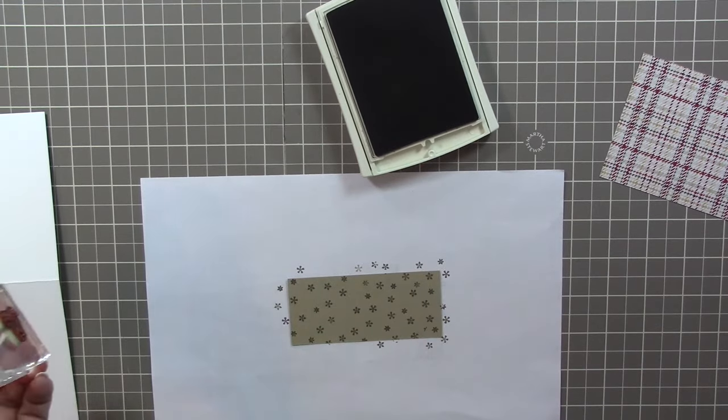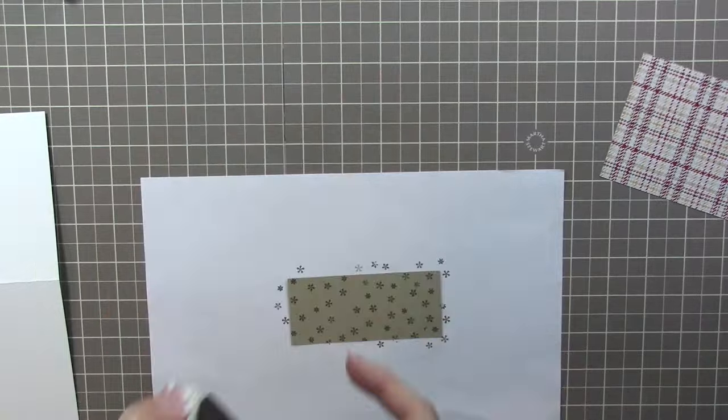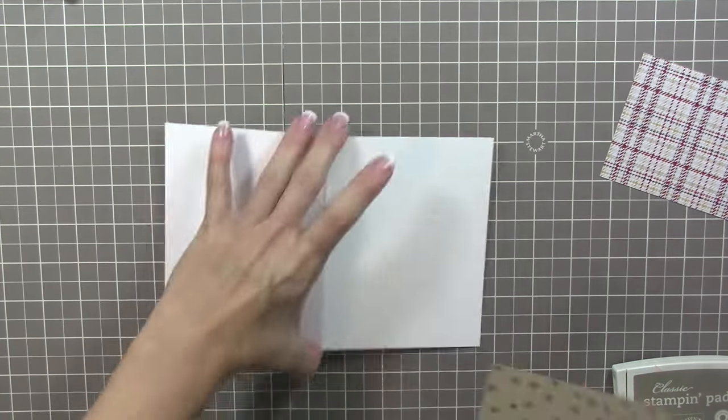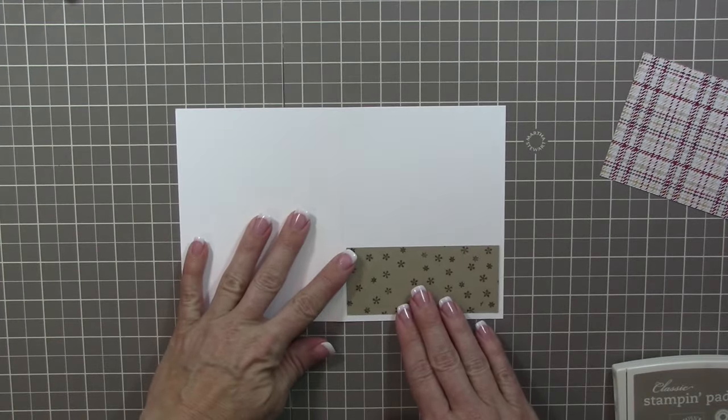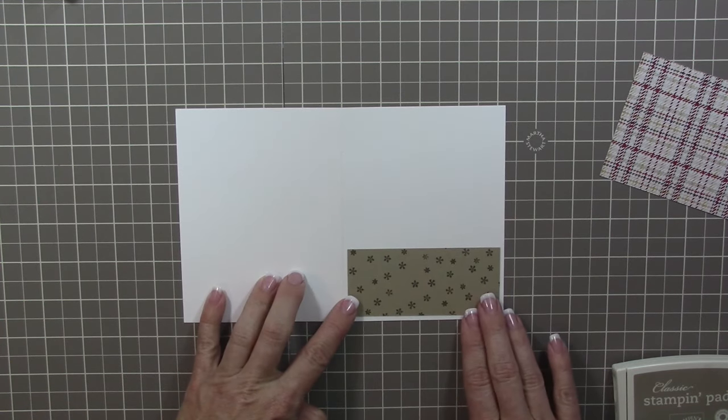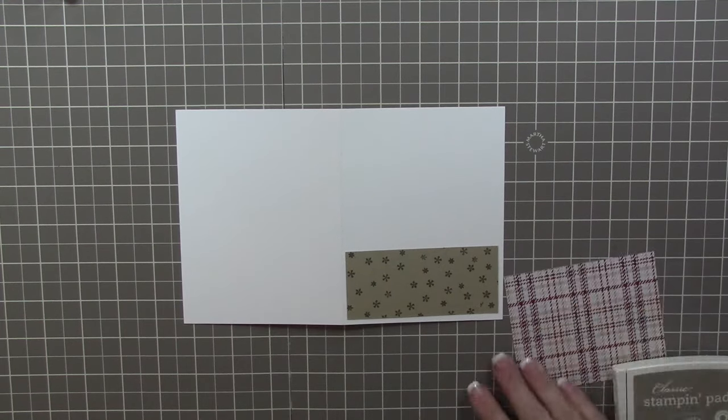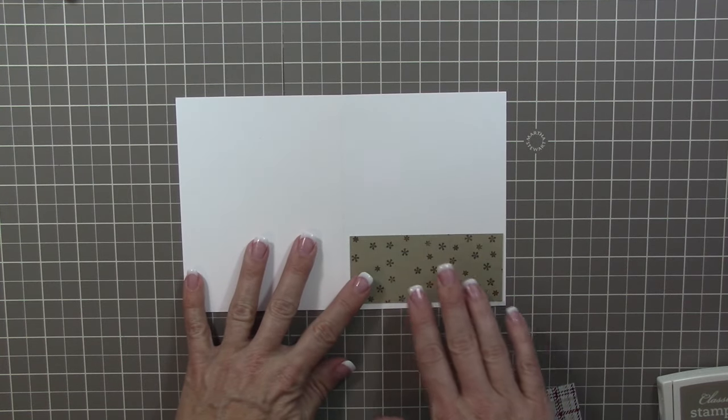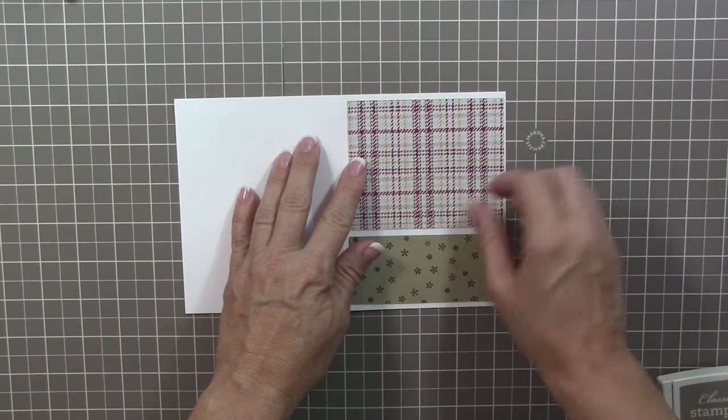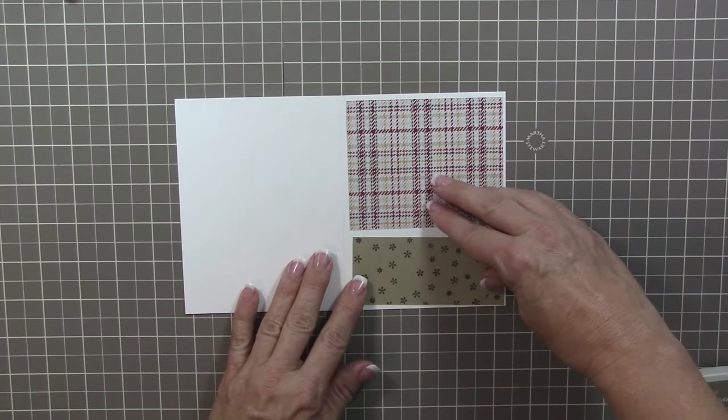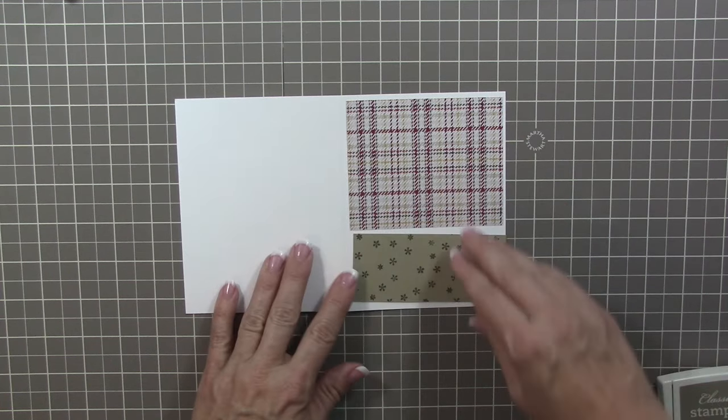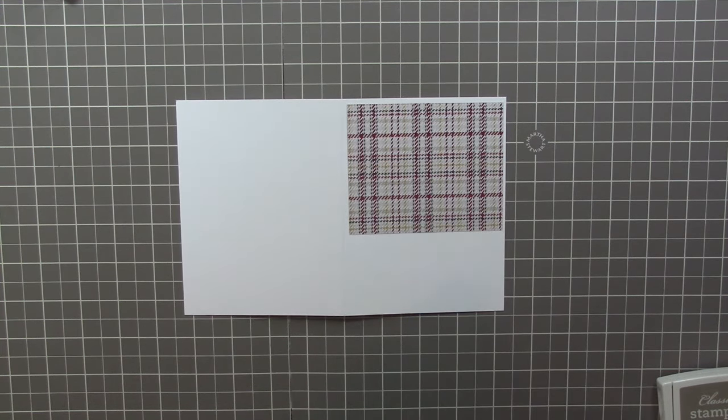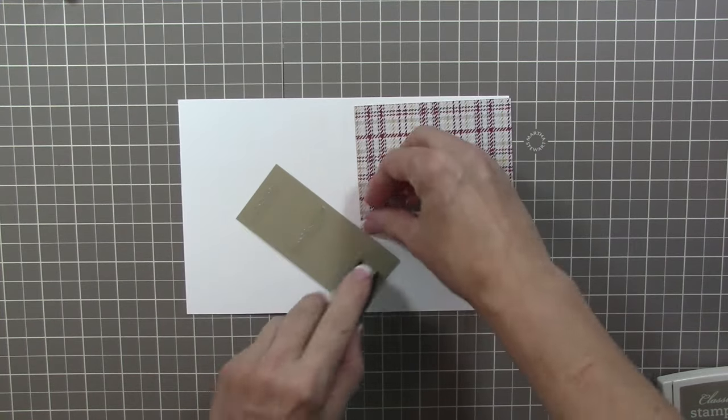I'm not sure if I gave you the dimensions for the designer series paper. That's going to measure four by three and three quarters. What I'm going to do is I'm just going to adhere that onto the front of the card base, just making sure that the bottom and the sides just have a quarter of an inch border showing. When I put the designer series paper, there's a gap, but I'm not worried about that because I'm going to cover that gap with some ribbon.